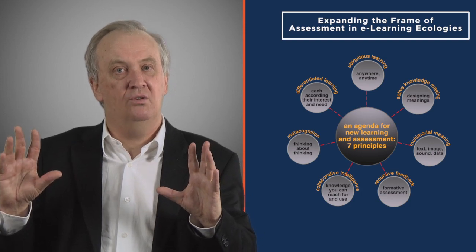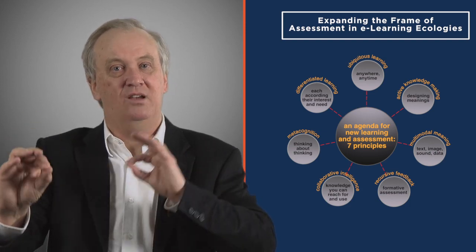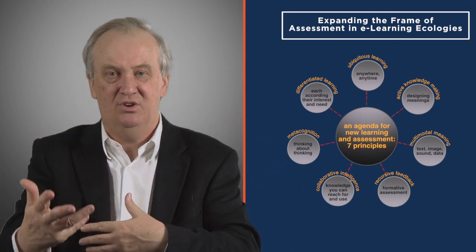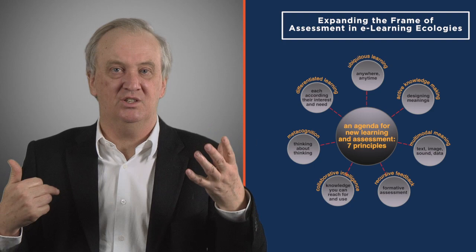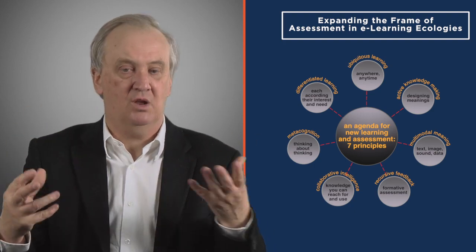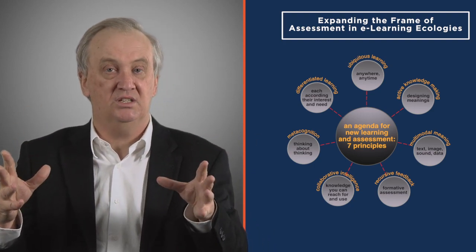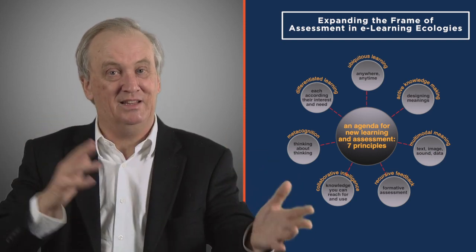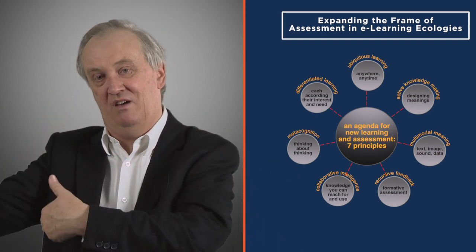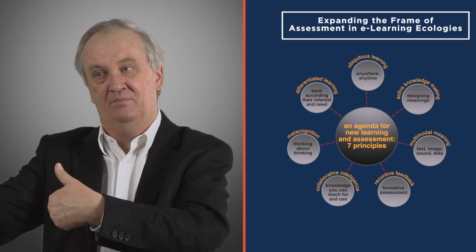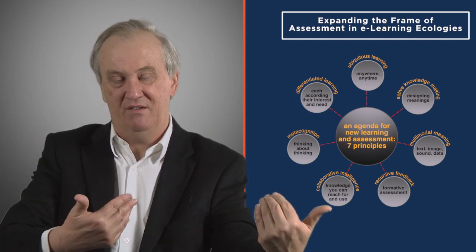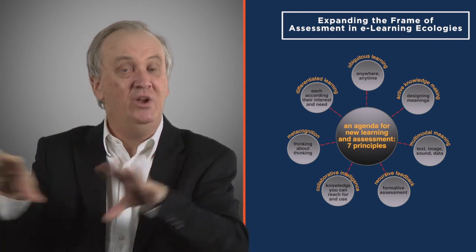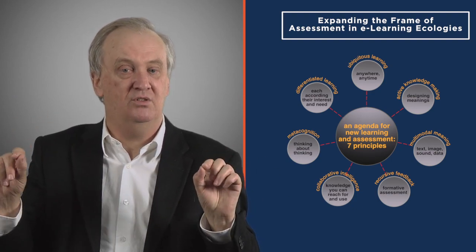We can also assess what we call active knowledge making — where a student is doing a project with multiple versions, and we can see how much time they've put into it because we can constantly monitor what's actually happening in that process. We can also monitor not just individual intelligence but collaborative intelligence: the feedback I gave to my peers on their work, the way I took on board their feedback, and the way I explicitly recognised the feedback they'd given. We can measure and value all those things.